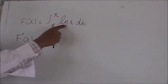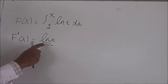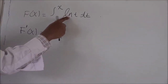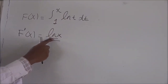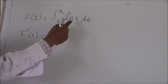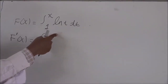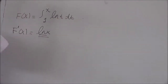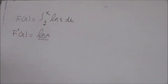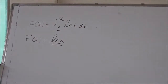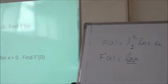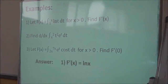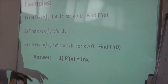For example, if it were t to the power of something, we'd have x to that power. If it is cos(t), we'll have cos(x). Therefore, it is simply a matter of changing the variable from t to x. So F'(x) is ln(x).